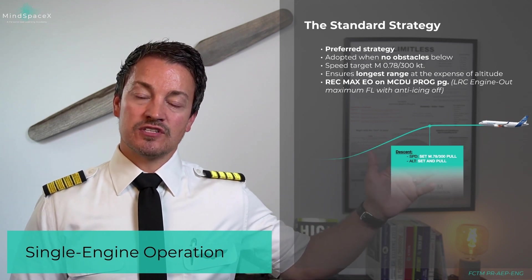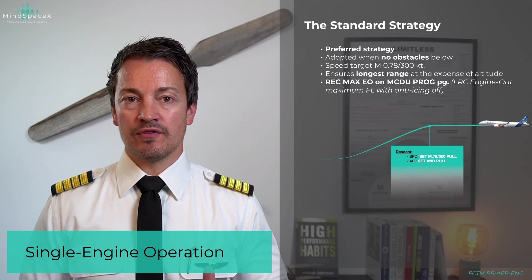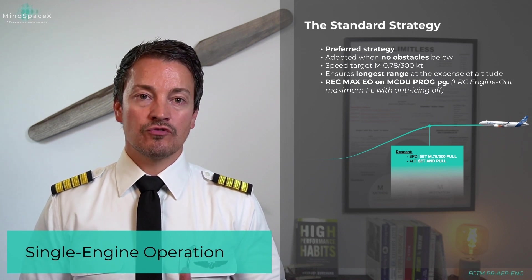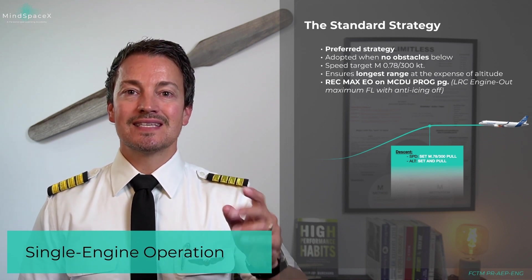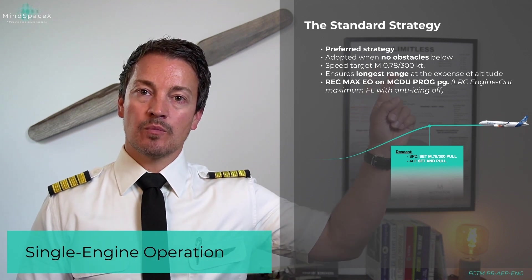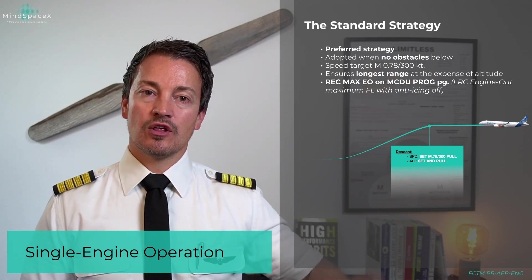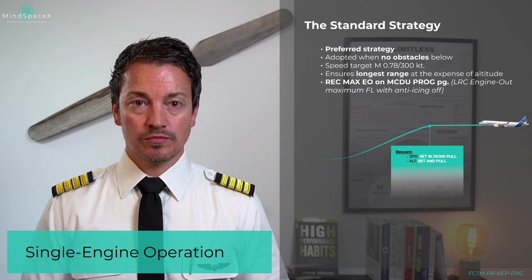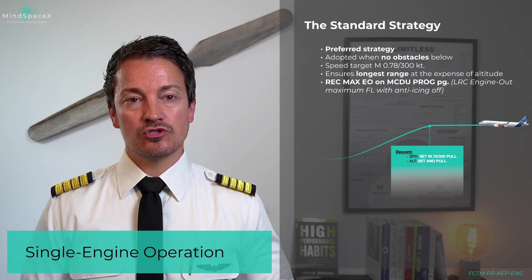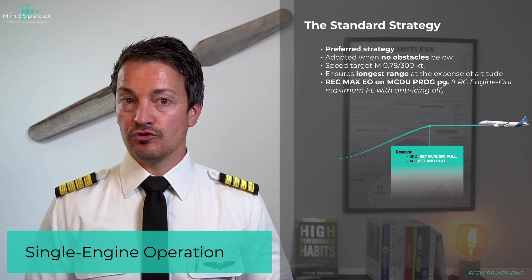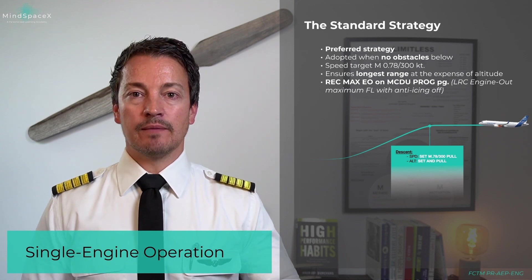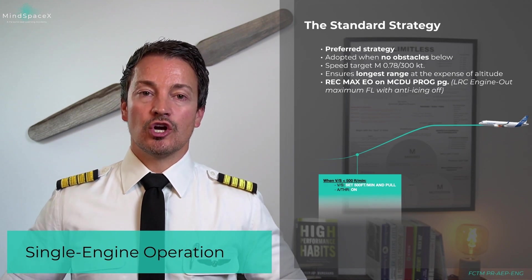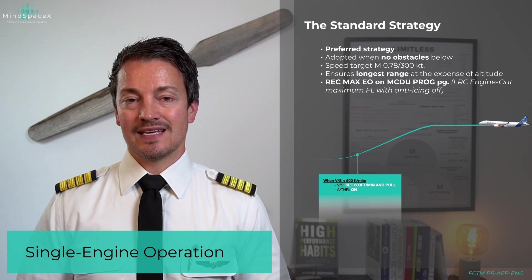Once the aircraft is ready to descend — that means as soon as we have informed ATC and before reaching green dot speed — we will set the appropriate speed, Mach 0.78 or 300 knots depending on the altitude, and pull. Then we will set the altitude, flight level 250 in this case, and pull. The aircraft will start its descent and we will reach the long range ceiling.